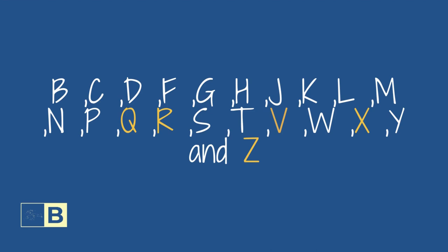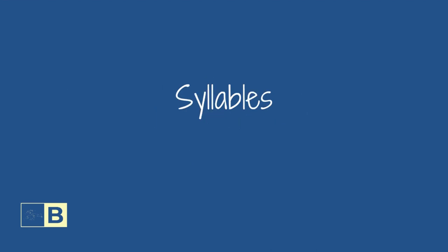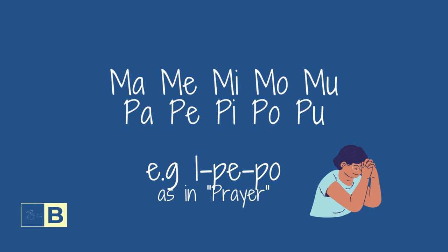We will now look at Syllables — learning how to conjugate and formulate Bamble words. Ma, Me, Mi, Mo, Mu. Pa, Pe, Pi, Po, Pu.